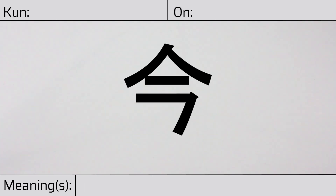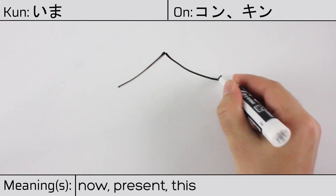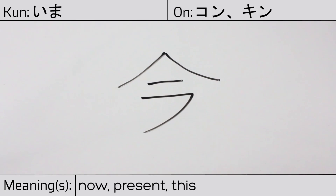Welcome to this lesson on Japanese kanji. Today, we'll be discussing this character. This kanji has a kunyomi or Japanese reading of ima, and it has onyomi or Chinese readings of kon or kin. This character has the meanings now, present, or this. Here is the stroke order.